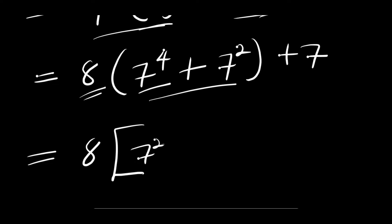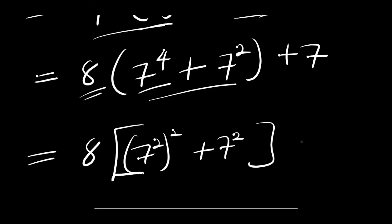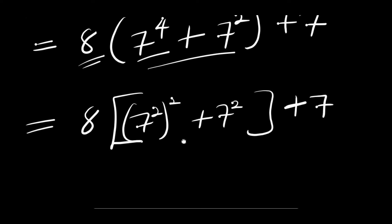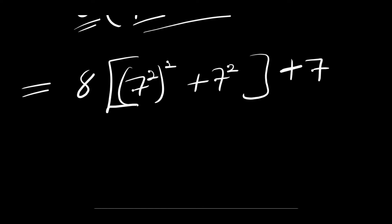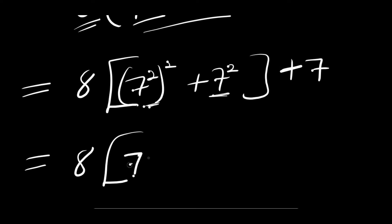We can rewrite this as 7 power 2 plus 1, or power 2, plus 7 power 2, then we have plus 7. The next thing is for us to factor out 7 power 2, because we have it here and here. So we can have 8 times 7 power 2...